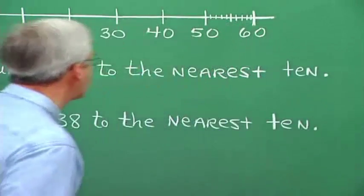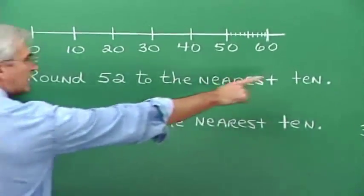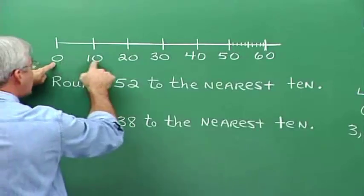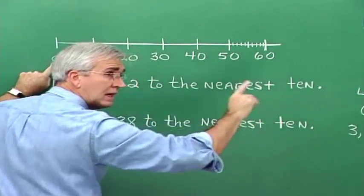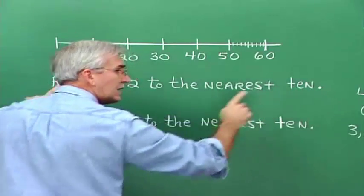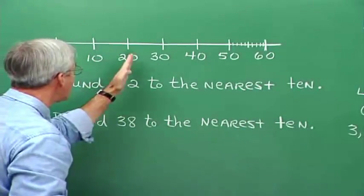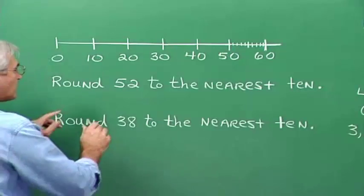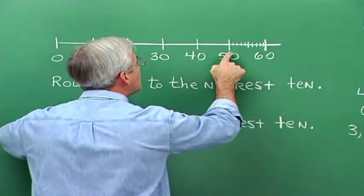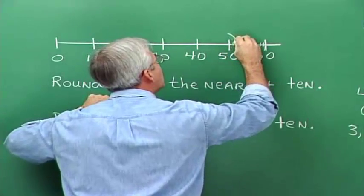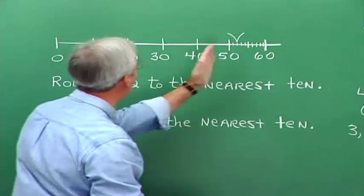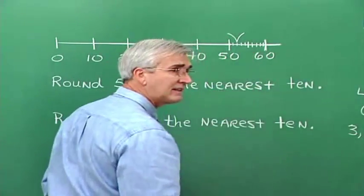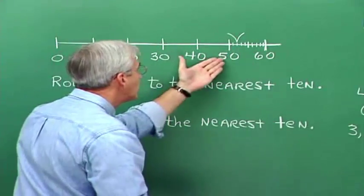Suppose we want to round 52 to the nearest 10. Here I have a number line that contains multiples of 10: 0, 10, 20, 30, 40, 50, 60, and so on. Rounding 52 to the nearest 10 simply means identifying which of these tens the number 52 is closest to. Let's identify the position of 52 — here's 50, 51, 52 — it's right here. It looks like it's closer to 50 than it is to 60. So to the nearest 10, 52 rounds to 50.